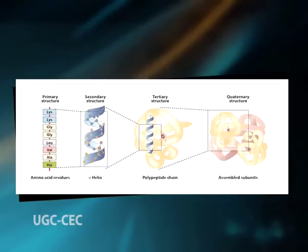The special arrangement of atoms in a protein is called its conformation. The possible conformations of a protein include any structural state that can be achieved without breaking covalent bonds. A change in conformation could occur, for example, by rotation about single bonds. Of the numerous conformations theoretically possible, one or a few generally predominate under biological conditions. Proteins in any of their functional folded conformations are called native proteins.